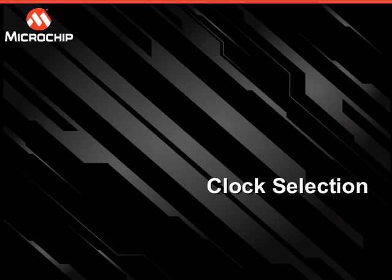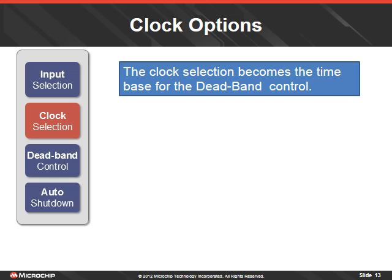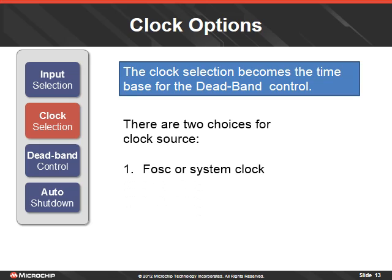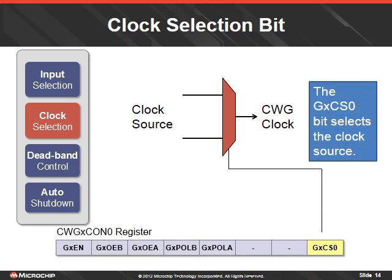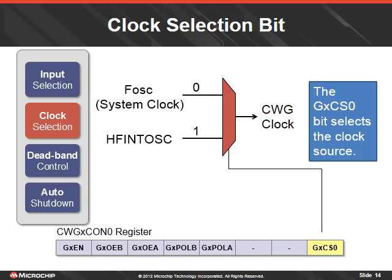The clock selection becomes the time base for the deadband control. There are two choices: the FOSC or system clock of the PIC-MCU device, and the high frequency internal oscillator. The CWG clock source bit determines the baseline clock for all CWG calculations. A zero selects the FOSC or system clock; a one selects the high frequency internal oscillator clock.